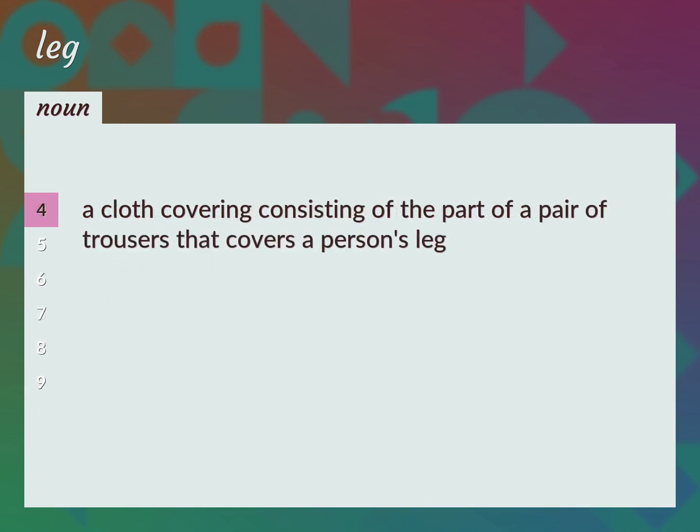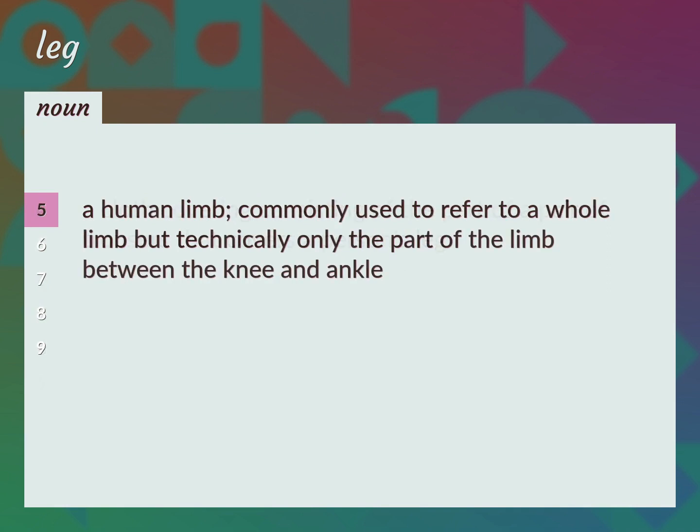A cloth covering consisting of the part of a pair of trousers that covers a person's leg. A human limb — commonly used to refer to a whole limb but technically only the part of the limb between the knee and ankle.